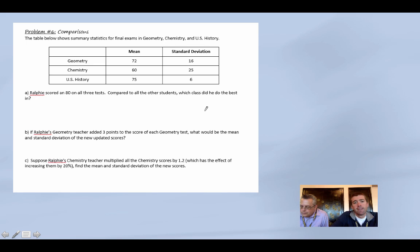So let's do some comparisons. Here's three tests. We know that Ralphie scored 80 on all three tests. Compared to the other students, which class did you do the best? So this is basically we need to find the z-scores for all three. Three z-scores. So 80 minus 72, that would be 8 over 16, so 0.5. The next one, 80 minus 60, that would be positive 20 divided by 25, is 0.8. And then 80 minus 75 would be positive 5 over 6, 0.833.